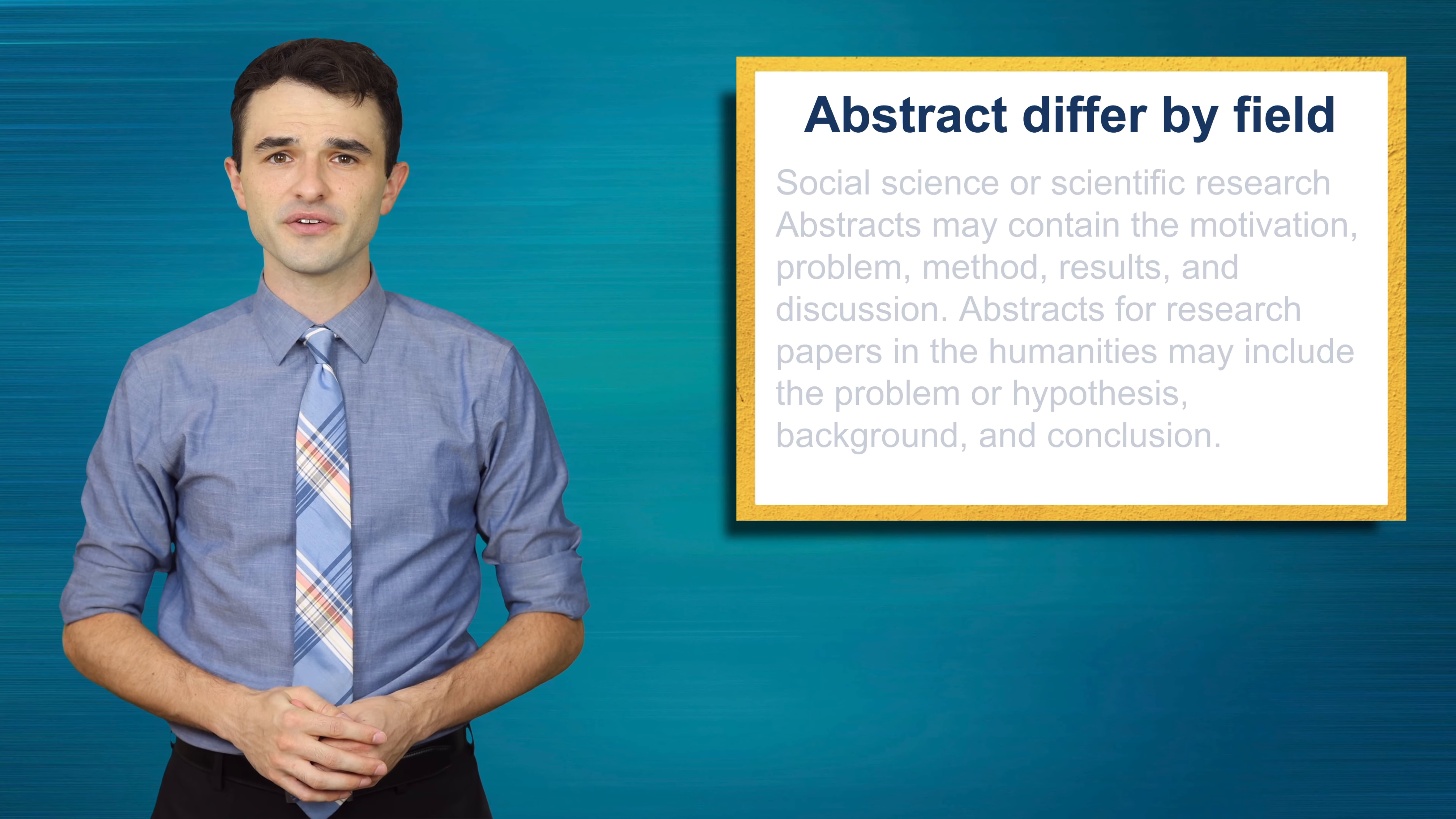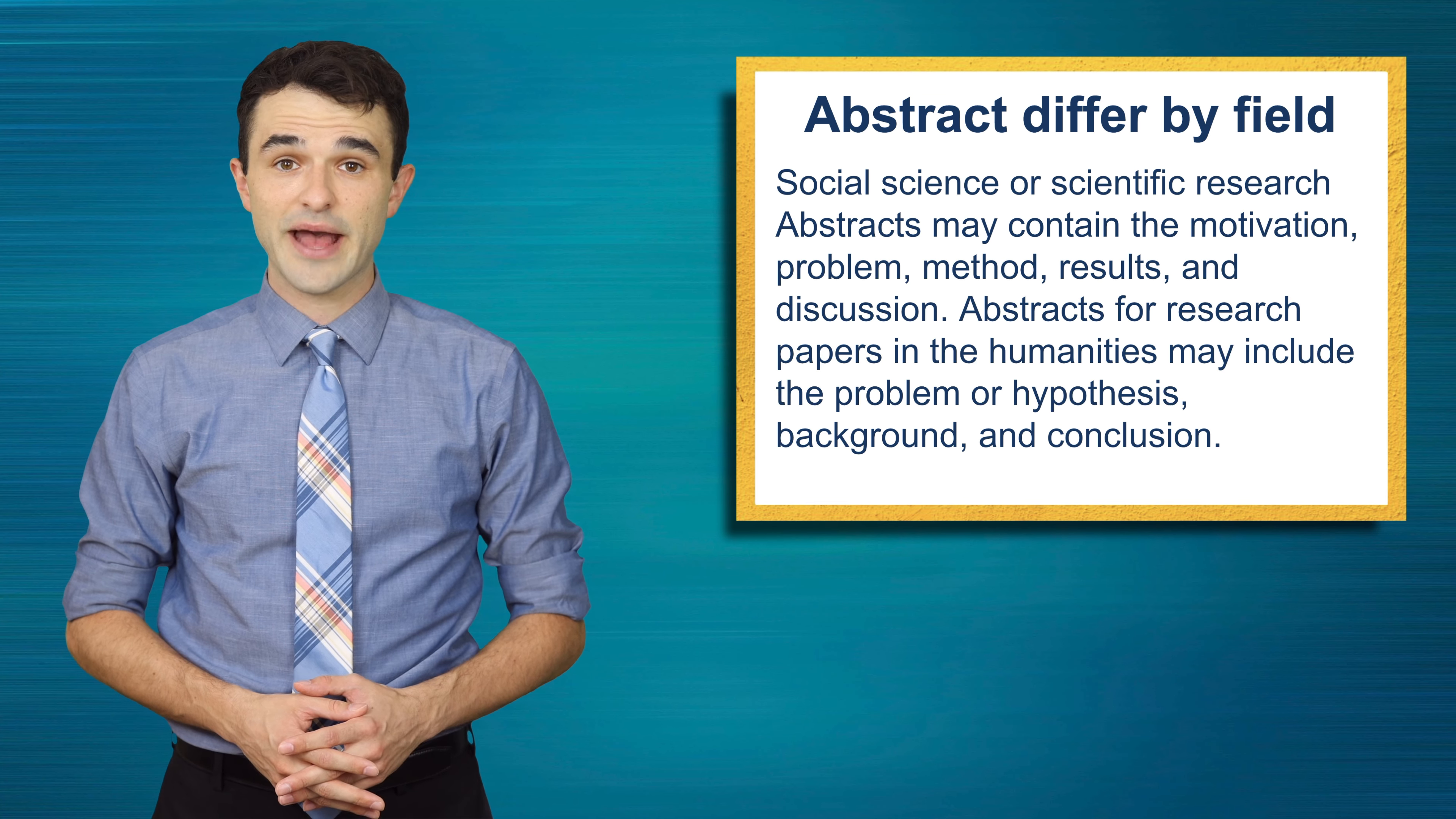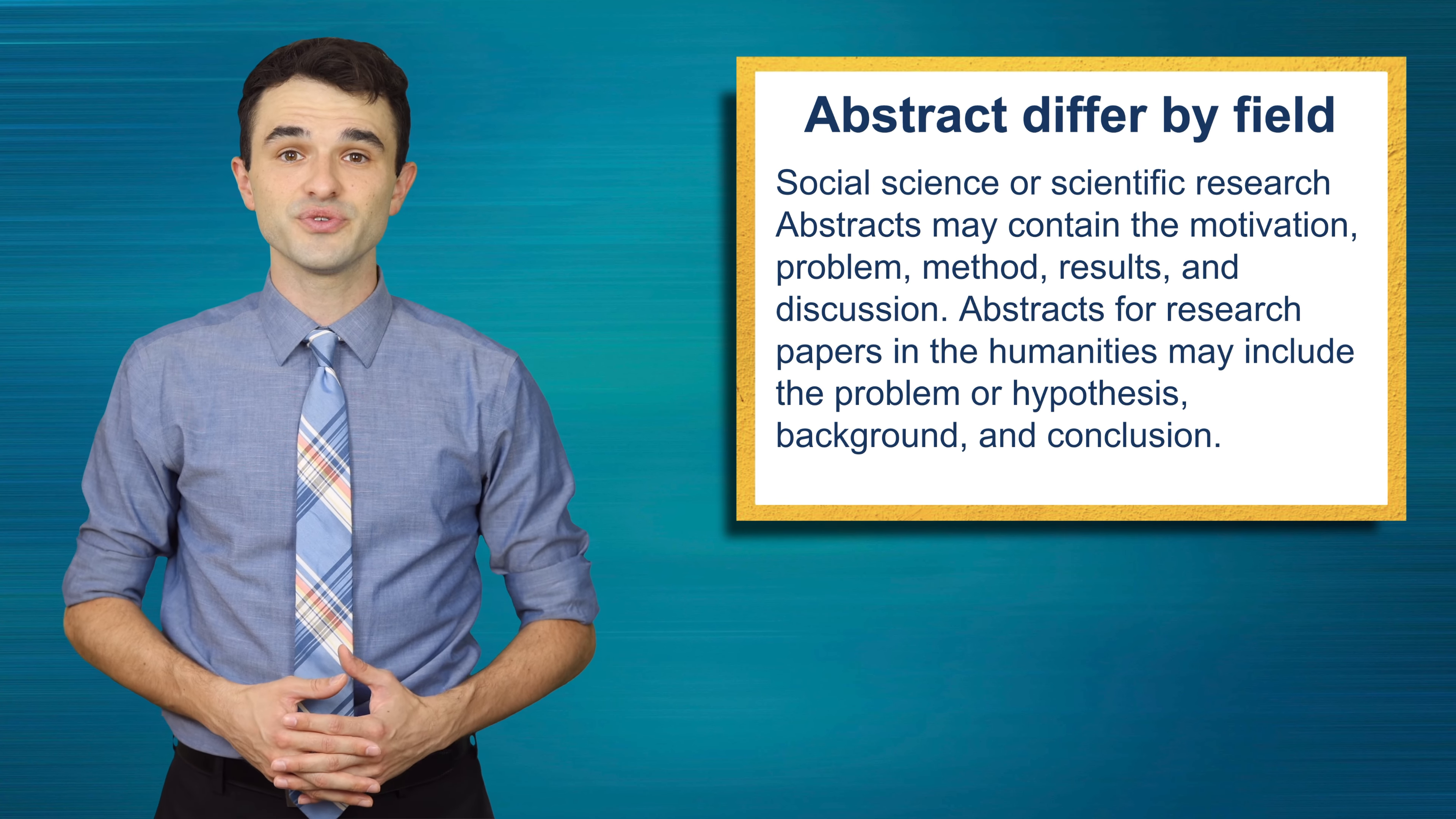Abstracts differ by field. Social science or scientific research abstracts may contain the motivation, problem, method, results, and discussion. Abstract papers for humanities may include the problem or hypothesis, background, and conclusion.